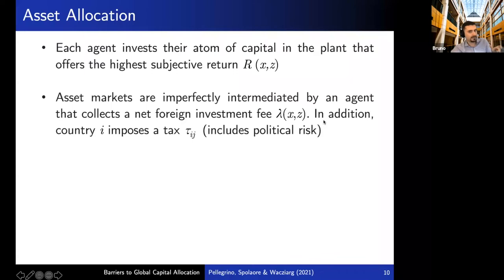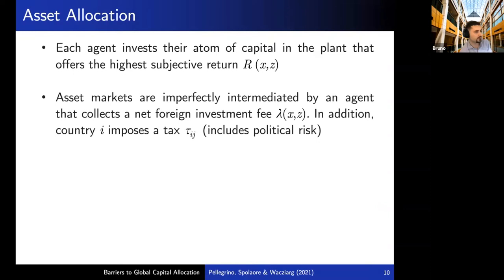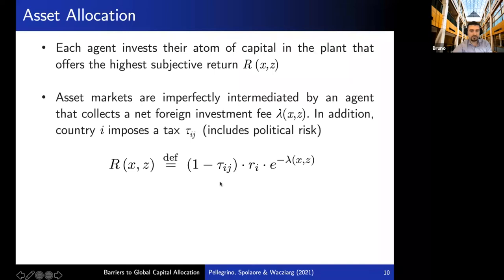In addition, the destination country I can impose a discriminatory tax against investors of country J, denoted tau_IJ. This tax should be thought of broadly — it includes actual taxation but can also include expropriation risk, so it captures political risk. The subjective return uppercase R(X,Z) equals the objective return R_I times two things: first, one minus the taxation rate tau_IJ; and second, e to the minus lambda — the multiplicative investment fee.